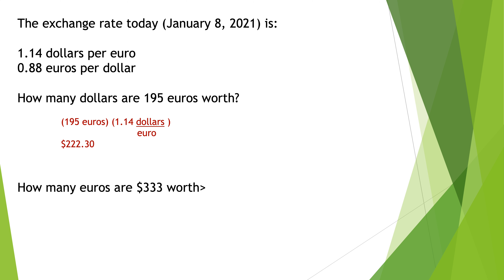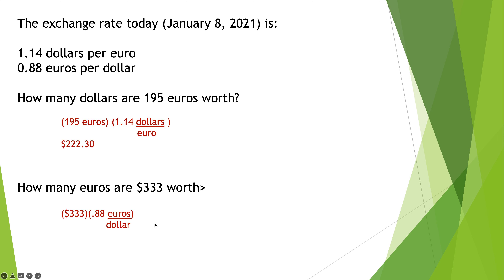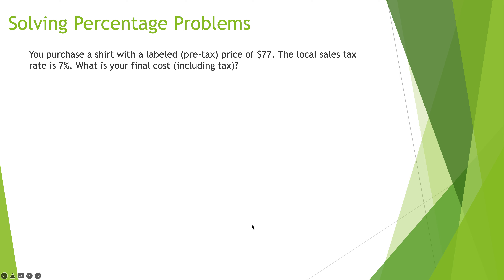How many euros are 333 dollars worth? Because we're starting with dollars in the numerator and want to eliminate dollars to be left with euros, we do 333 dollars times 0.88 euros per dollar, canceling out the dollars, and I'm left with 293.04 euros. Percentage problems are something we always need to be aware of and comfortable with.